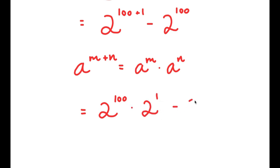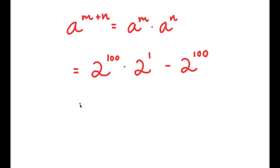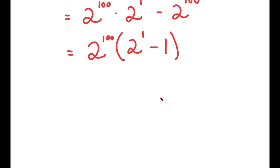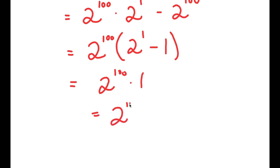And now I have this minus 2 to the power of 100. From here, I can factor out 2 to the power of 100. So I get 2 to the power of 100 times 2 to the power of 1 minus 1. Now, 2 to the power of 1 is equal to 2, and 2 minus 1 is 1. So I'm left with 2 to the power of 100 times 1, which is equal to 2 to the power of 100.